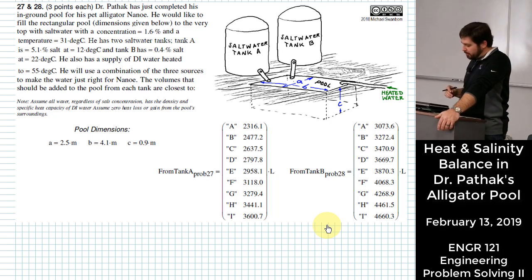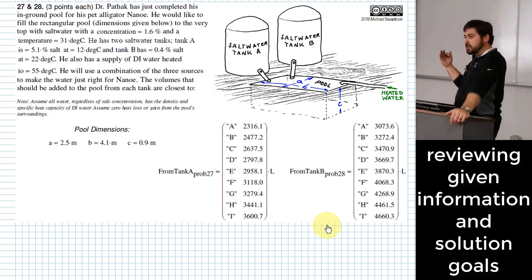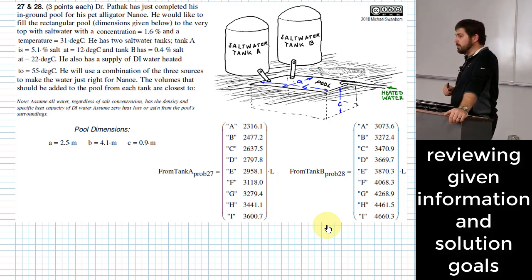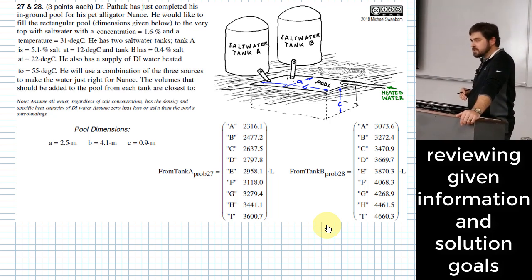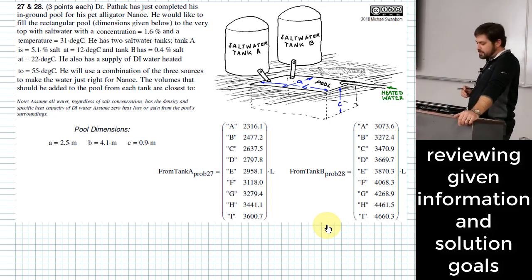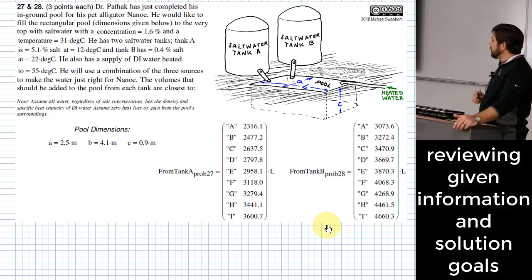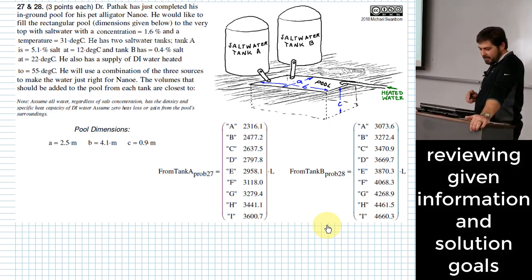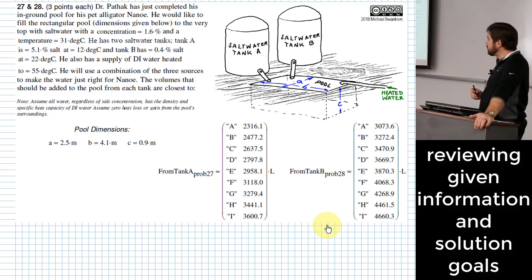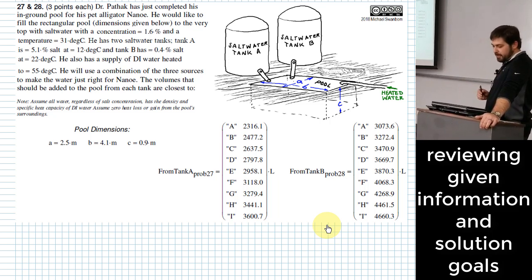Specifically, we're trying to solve this problem where Dr. Pathak, which I'm not sure if any of you have had him yet, but he has his beloved alligator Nano. And he wants to fill his pool that he just created for Nano, and that pool has the dimension shown. He wants to fill that all the way up with salt water that has a concentration of 1.6% salt. And he also wants to get the temperature right exactly at 31 degrees C. For some reason, he has two salt water tanks, and tank A has 5.1% salt and 12 degrees C is the temperature of that water. Tank B has 0.4% salt but is warmer at 22 degrees C. He also has a supply of heated DI water that he can use.